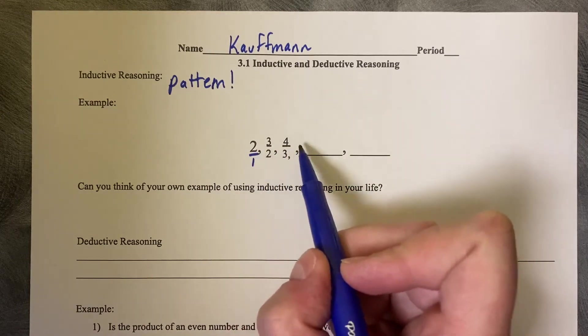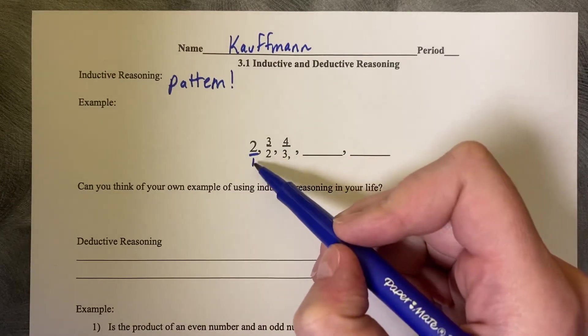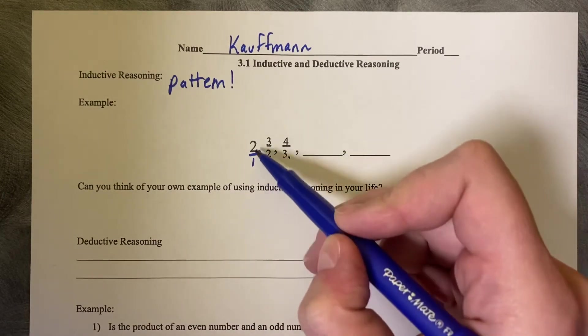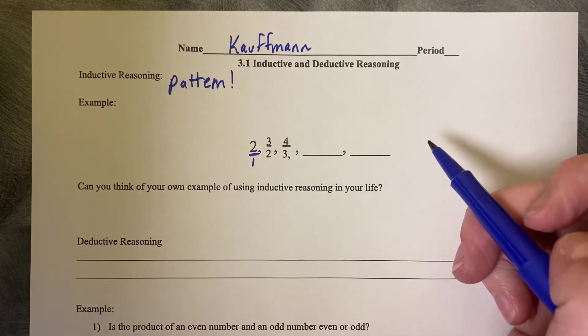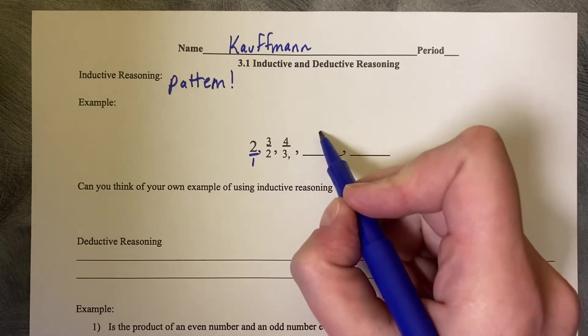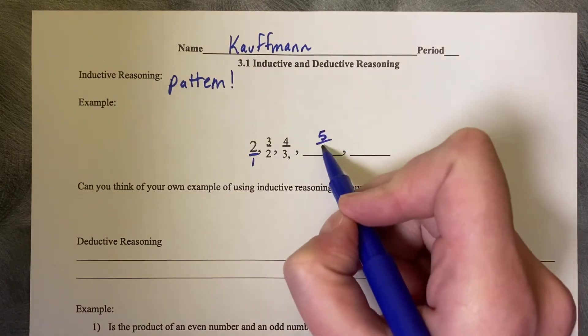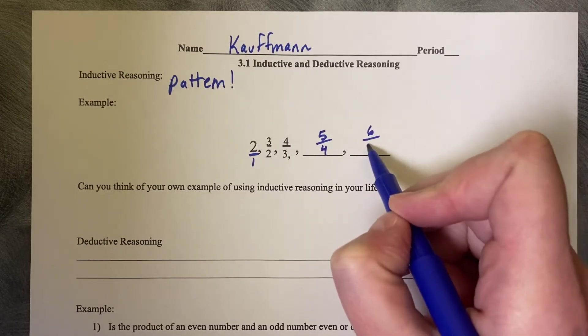The numerator is increasing by 1 and the denominator is increasing by 1. Also, you can see that it's counting 1, 2, 2, 3, 3, 4. However you see this pattern, we can continue this. And so the next one is going to be, the numerator is going to be 5 and denominator is going to be 4. Numerator is going to be 6 and denominator is going to be 5.